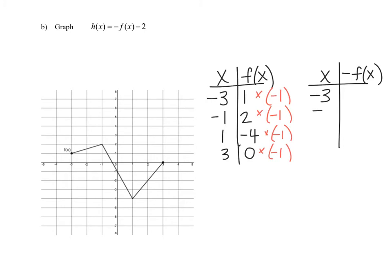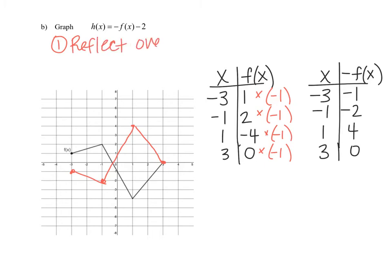The x values don't change — only the y values are multiplied by negative 1. Plotting the new points: negative 3, negative 1; negative 1, negative 2; 1, 4; and 3, 0. Connecting those four points, you'll see we've reflected the original graph over the x-axis. The left endpoint jumped across the x-axis — that's the reflection. When we multiply y values by a negative, it reflects the graph over the x-axis. So our first transformation is a reflection over the x-axis.